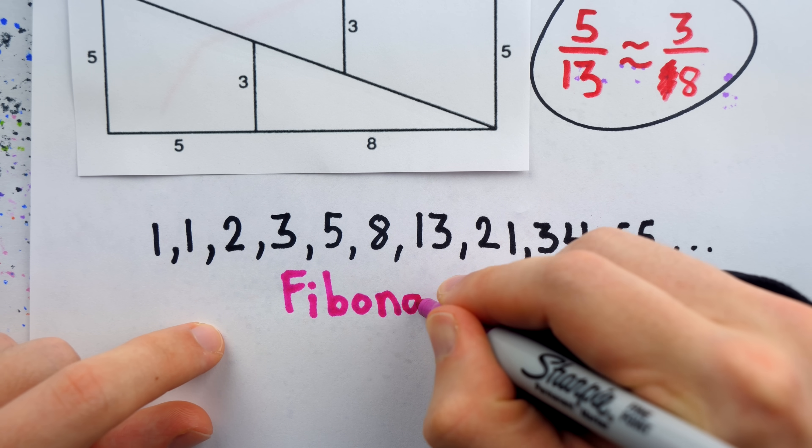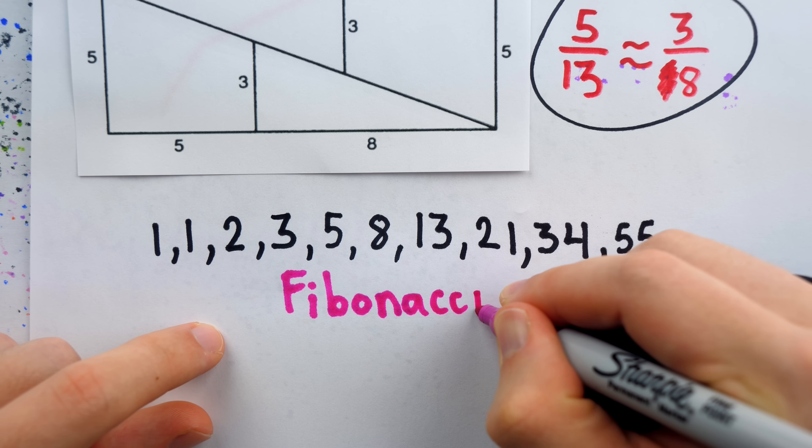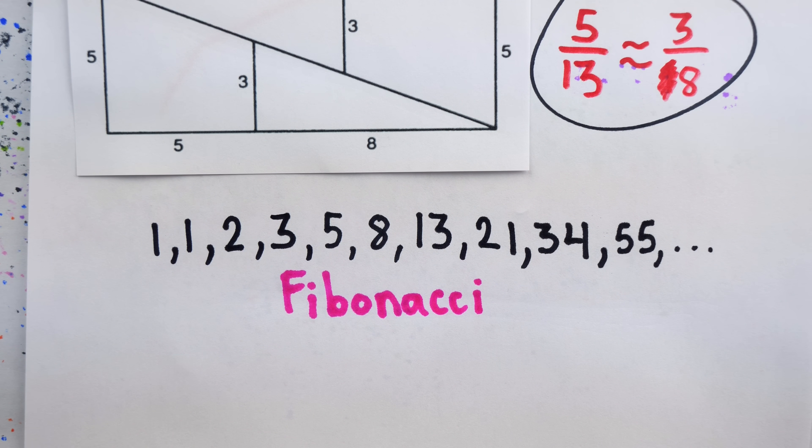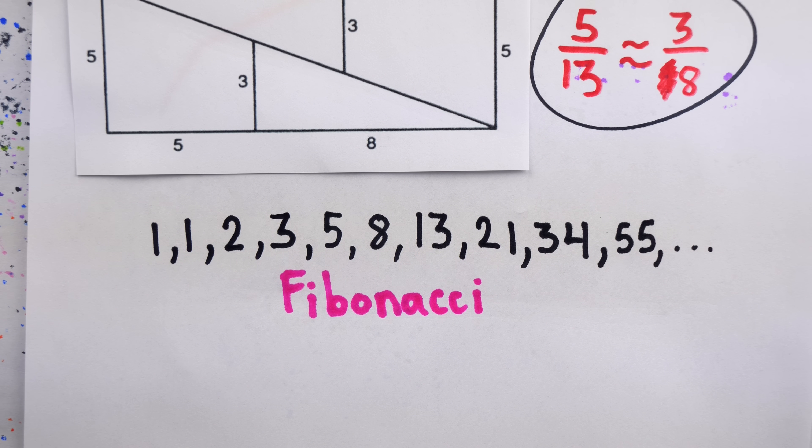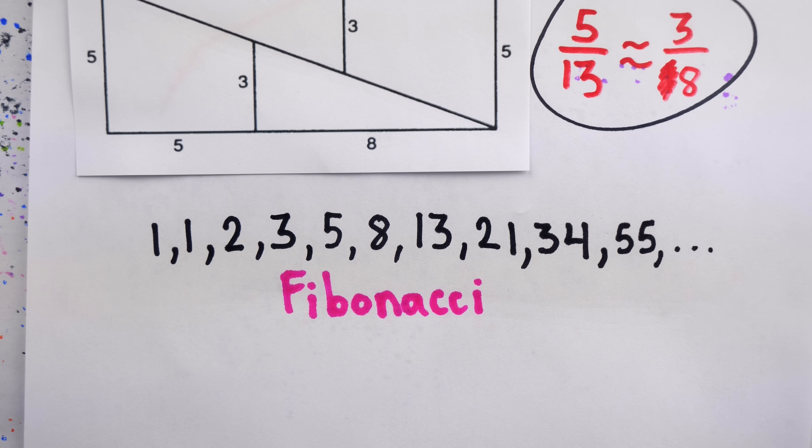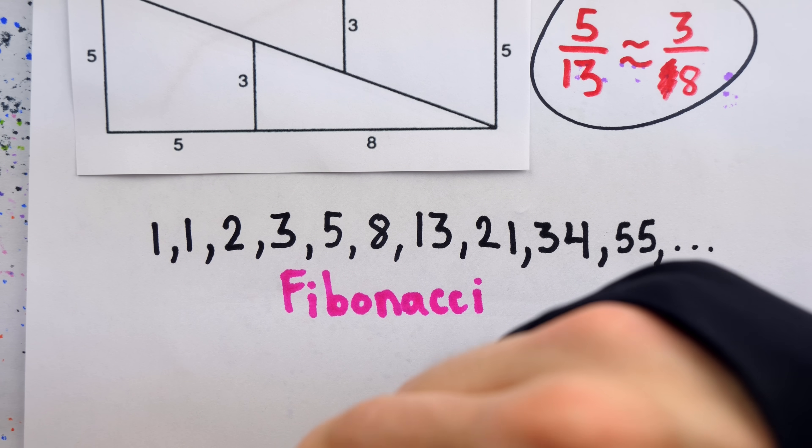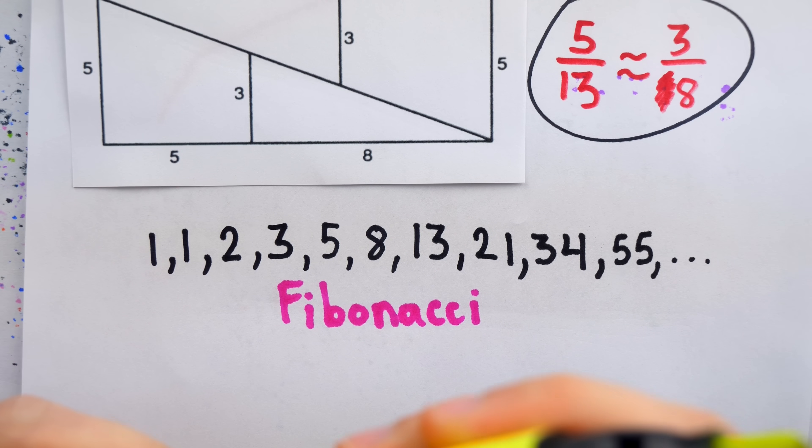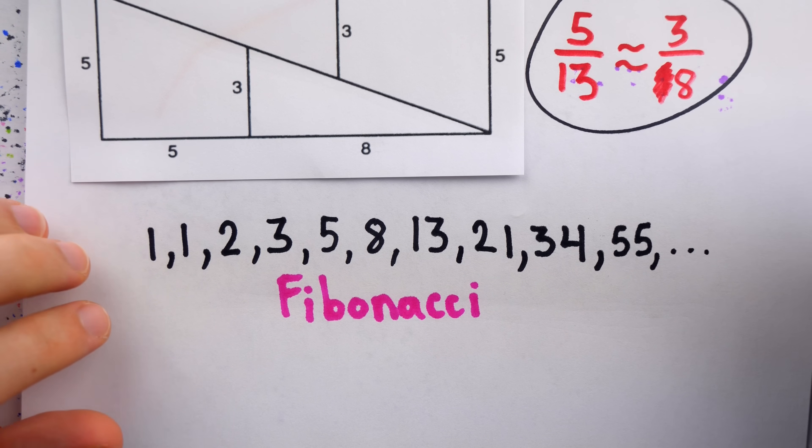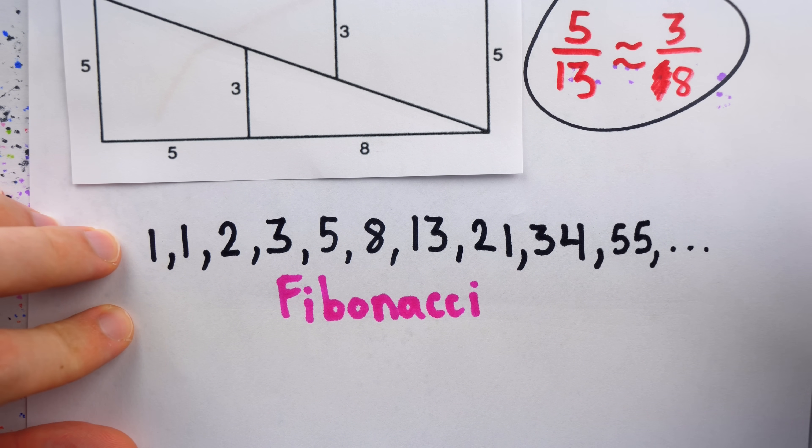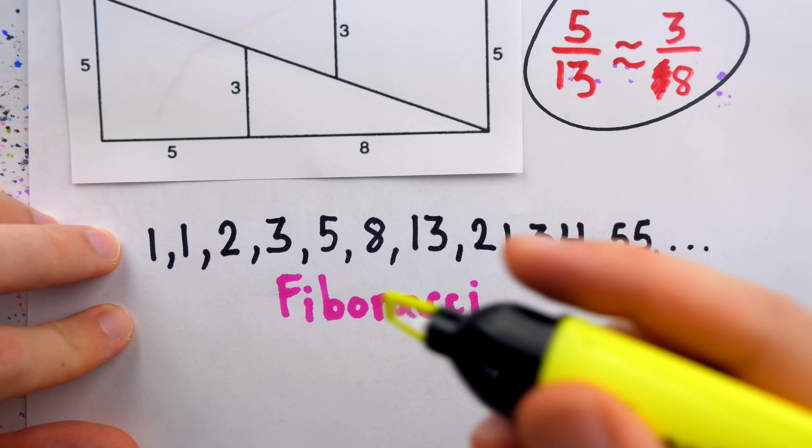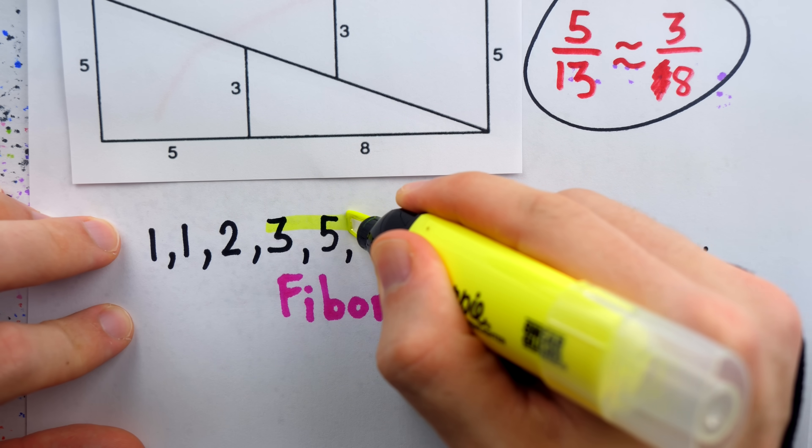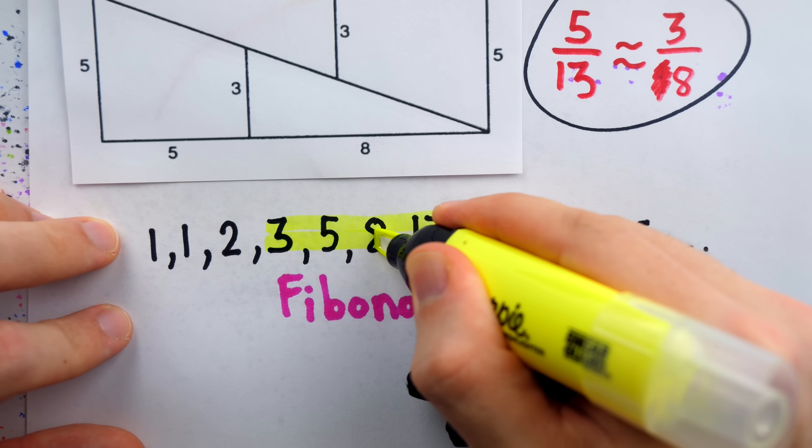Now, the Fibonacci sequence, named after the mathematician known as Fibonacci, who found the sequence in relation to a problem concerning very sexually active rabbits. This sequence has many fascinating properties, but one of these properties can be seen when we look at four consecutive numbers from the sequence. Like in our case, the four relevant numbers were 3, 5, 8, and 13.